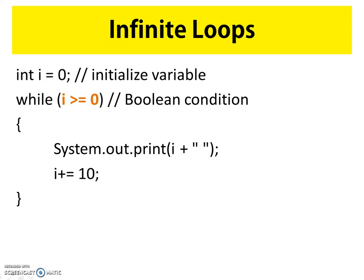It then goes back up to the condition statement and tests again: is i, which is now 10, greater than or equal to zero? Yes, this is true. So the code block runs again — i is printed to the screen, so 10 is printed, a space is printed, and then i is increased from 10 to 20. The condition is tested again: is 20 greater than or equal to zero? Yes. As you can see, we're only just increasing the value of i, so i will always be greater than or equal to zero. Based on the way this loop is written, the condition statement will always be true — this is an infinite loop, and it will not exit until all the memory is gone and the system crashes.